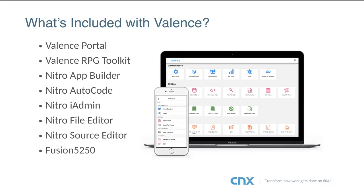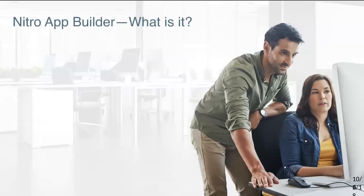Fusion 5250 is the latest big feature — an HTML5 emulator. With everyone working from home due to the coronavirus situation, this has become a really important feature because it gives users an emulator right within Valence without installing anything on their PCs. The Nitro app builder gets a star next to it because it's really the star of the show — it drives most of our sales because it's what makes creating and deploying applications most efficient.